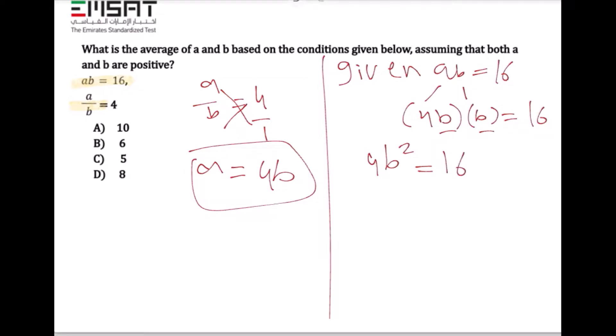After that, we will divide both by 4, so 4 divided by 4 and 16 divided by 4. It will be b squared equals 16 divided by 4, which is 4. The square root of 4 equals 2, so b equals 2.